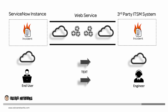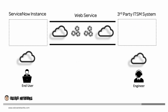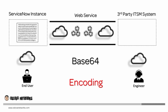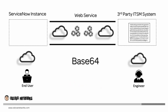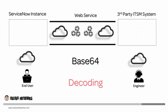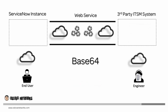When using web services we can only send text, so how can we achieve this? To send files via web service is quite simple. When the user attaches a file in the ticket, we'll have to use Base64 to encode the file. As a result we get a large string of text using ASCII characters. Then we can use the web service as a mechanism to transport the encoded string to the third-party ITSM system. Once received, we can decode the string and obtain a copy of the original file attached by the end user.